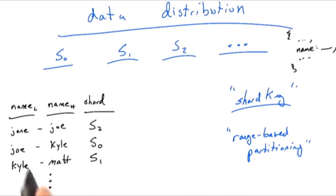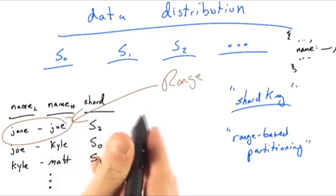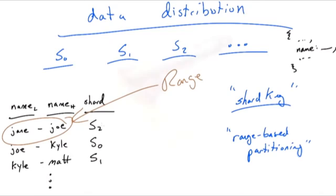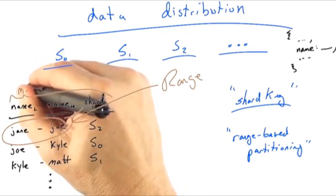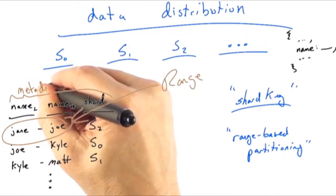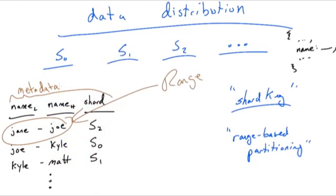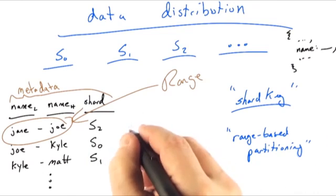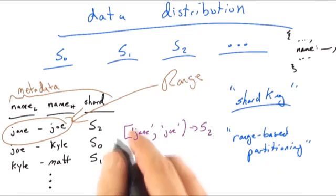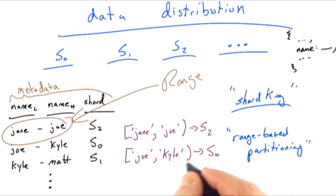So what we get is these ranges, and they map to a particular shard, and that is our metadata. So this is our metadata, which really tells us the location of documents in the cluster. So another way to look at it would be to use more math-like notation. This range maps to shard two, and then this range maps to shard zero. And this is in the context of a given collection. So we can have different shard keys for different collections. This discussion is all within the context of the particular collection which we have sharded.